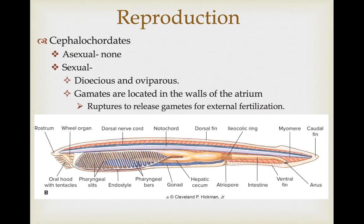There is no asexual reproduction known in cephalochordates. Sexually, they are dioecious, showing oviparous reproduction patterns. The gametes are located in the walls of the atrium, and this region of the body actually ruptures to release the gametes for external fertilization.